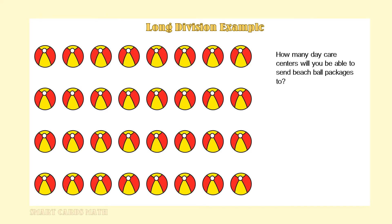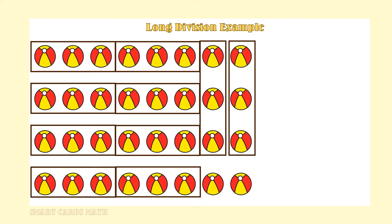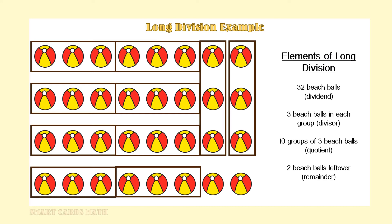Look at the following collection of 32 beach balls. Let's say you want to send packages of three balls to each daycare center in your area. How many daycare centers will you be able to give beach ball packages to? When we put squares around groups of three beach balls, we find out that there are ten groups of three beach balls with two beach balls left over. So ten daycare centers will get packages. This is an illustration of division.